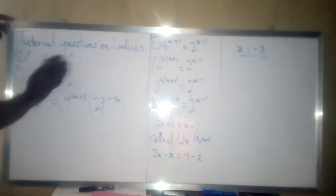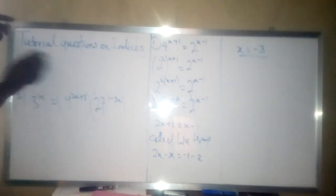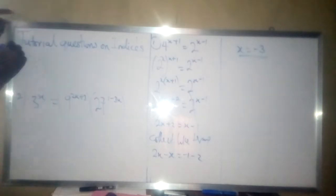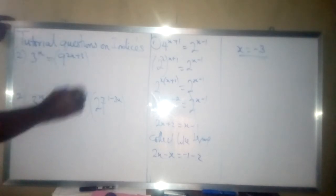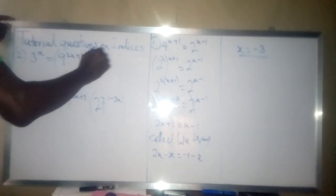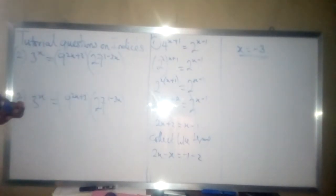Now let's look at the second question. The second question is 3 raised to power x is equal to 9 raised to power 2x plus 3 multiplied by 27 raised to power 1 minus 3x.